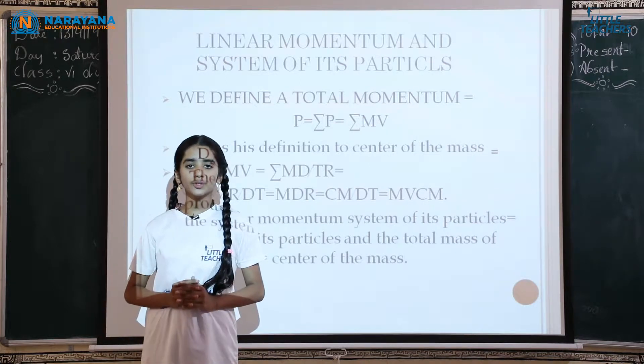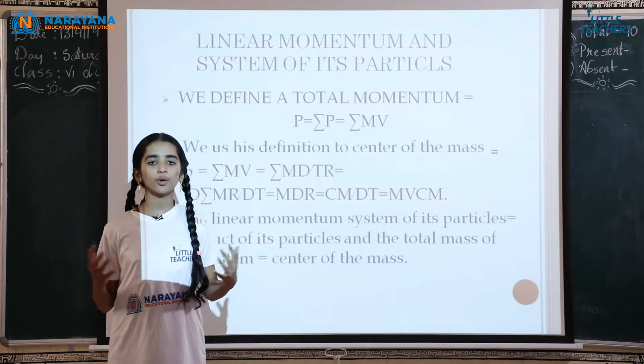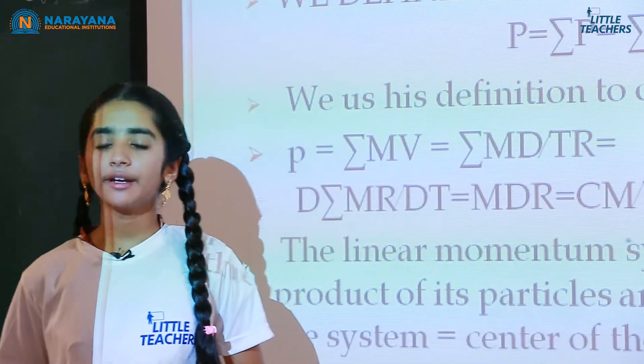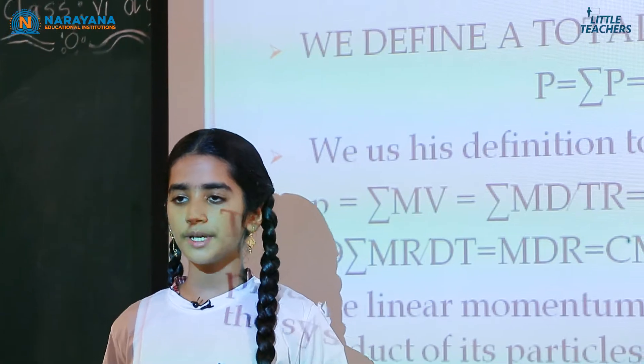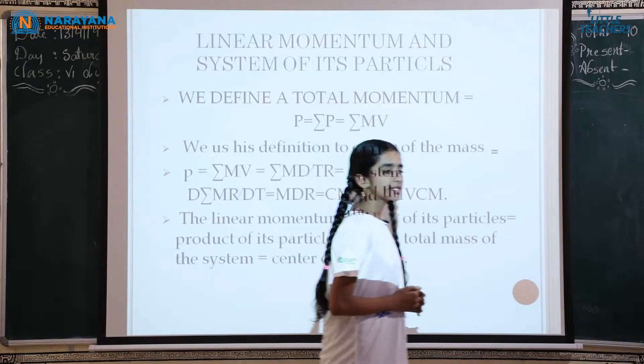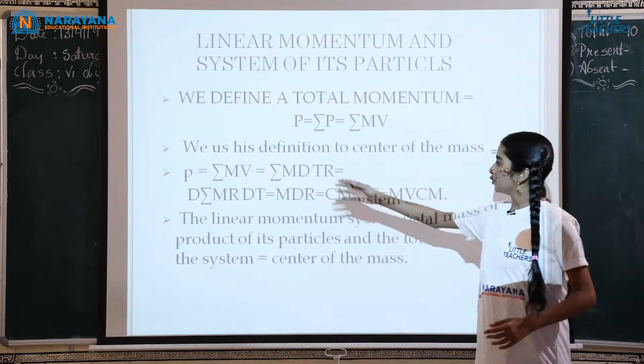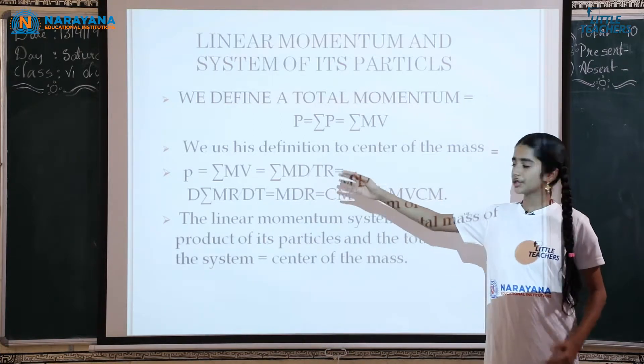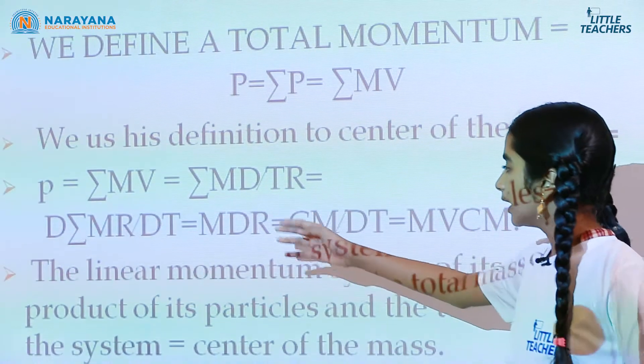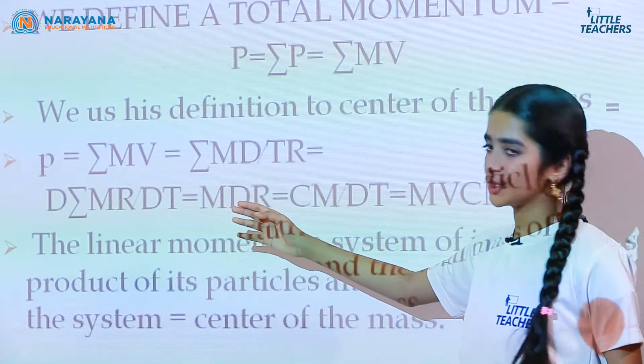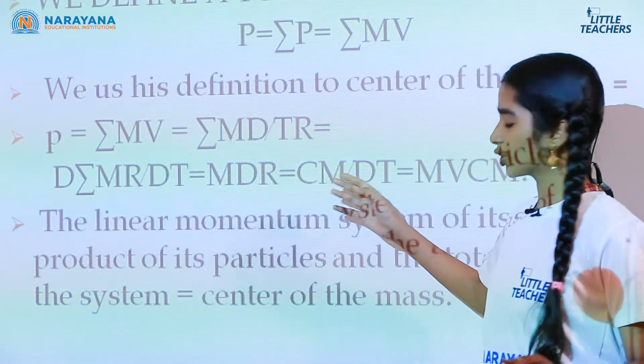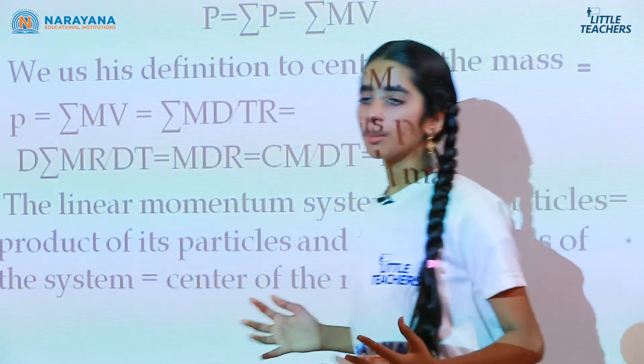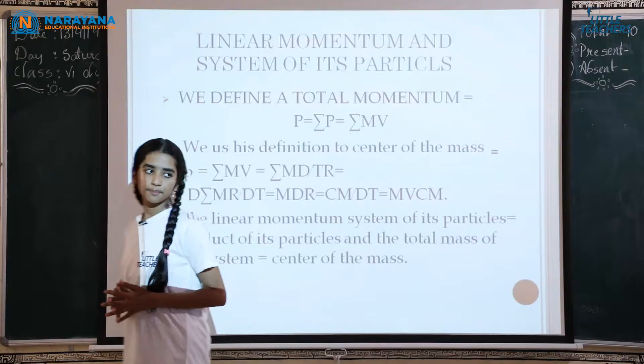Linear momentum. Now since we completed Newton's laws of motion, we are going to read linear momentum system of its particles. We define a total momentum P equals sigma P equals sigma MV. We use this definition to center of mass: P equals sigma MV equals sigma MD by TR. D sigma MR by DT equals MDR equals CM by DT equals MVCM. The linear momentum system of its particles is product of its particles.